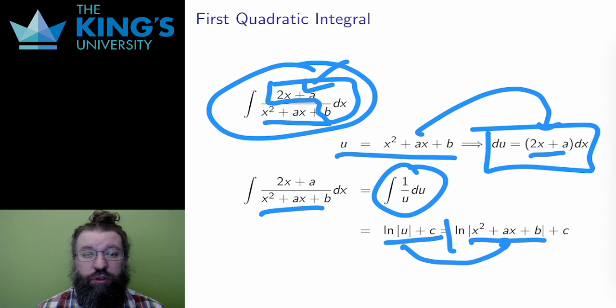And then I replace the substitution, and the antiderivative of the original integral is the logarithm of the absolute value of the quadratic plus a constant c.